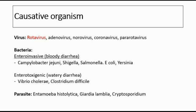For bacteria, there are two classes. The first is entero-invasive bacteria, which cause bloody diarrhea, also known as dysentery. The other class is entero-toxigenic bacteria, which secrete toxins and cause only watery diarrhea with no blood.